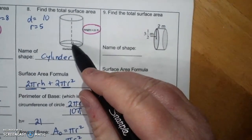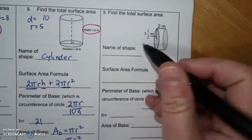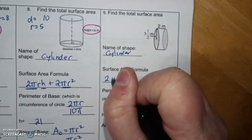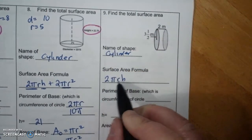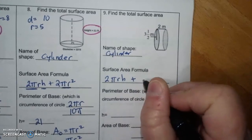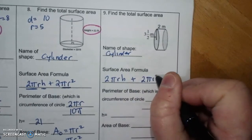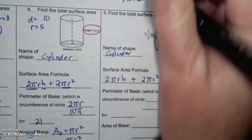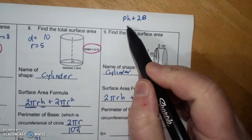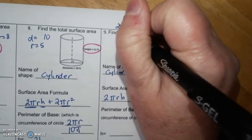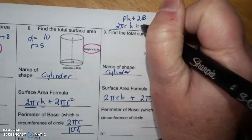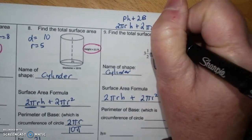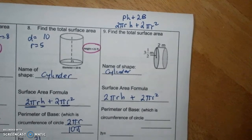Cylinders do not have to sit on the circles, they can do this. Name of shape it's a cylinder. 2πrh circumference times the height plus 2πr squared. So remember when you had ph plus 2b, the perimeter of a circle is circumference times the h, then the 2 and the area of the base is a circle which is πr squared. That's how that formula gets to be.